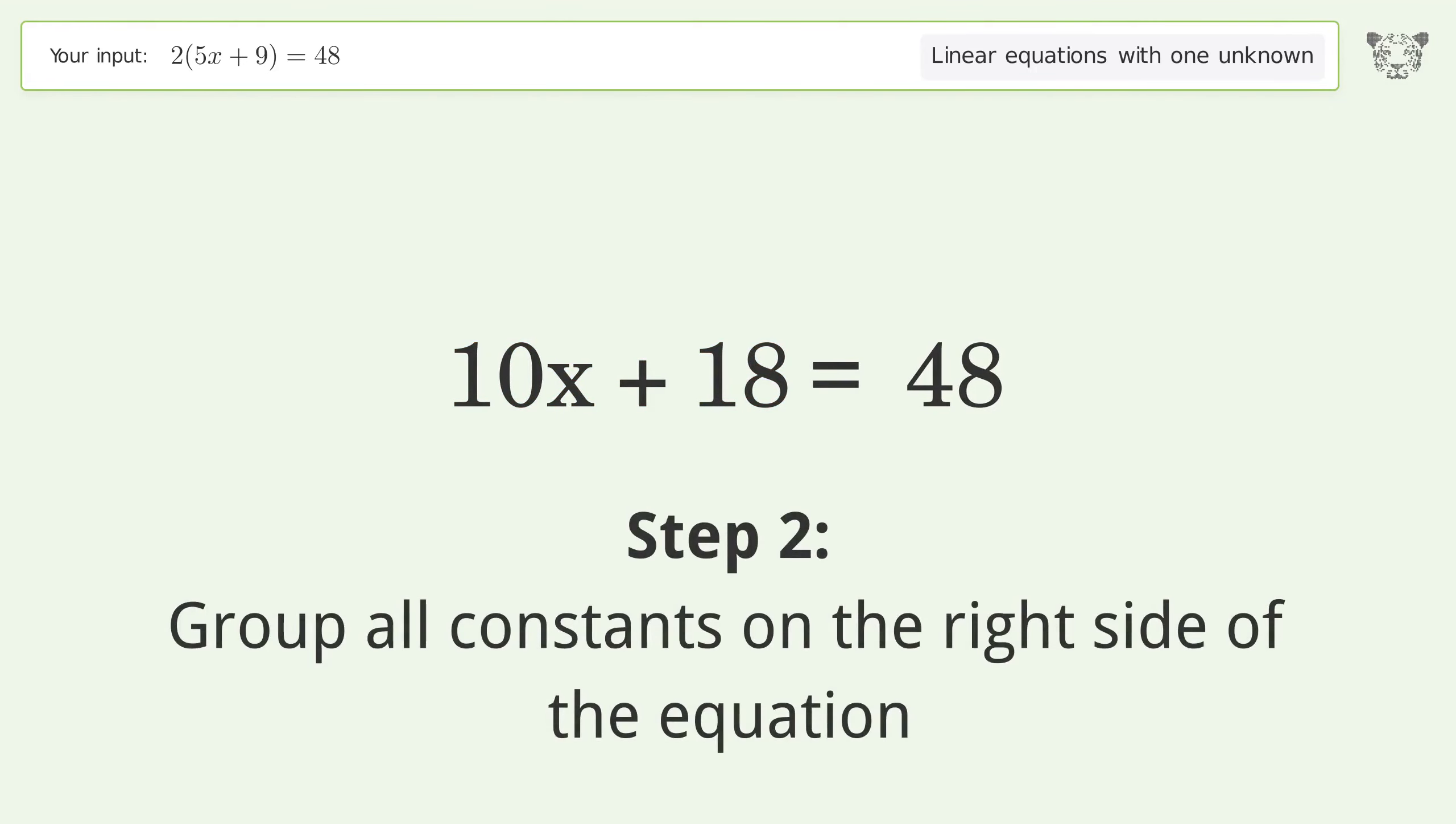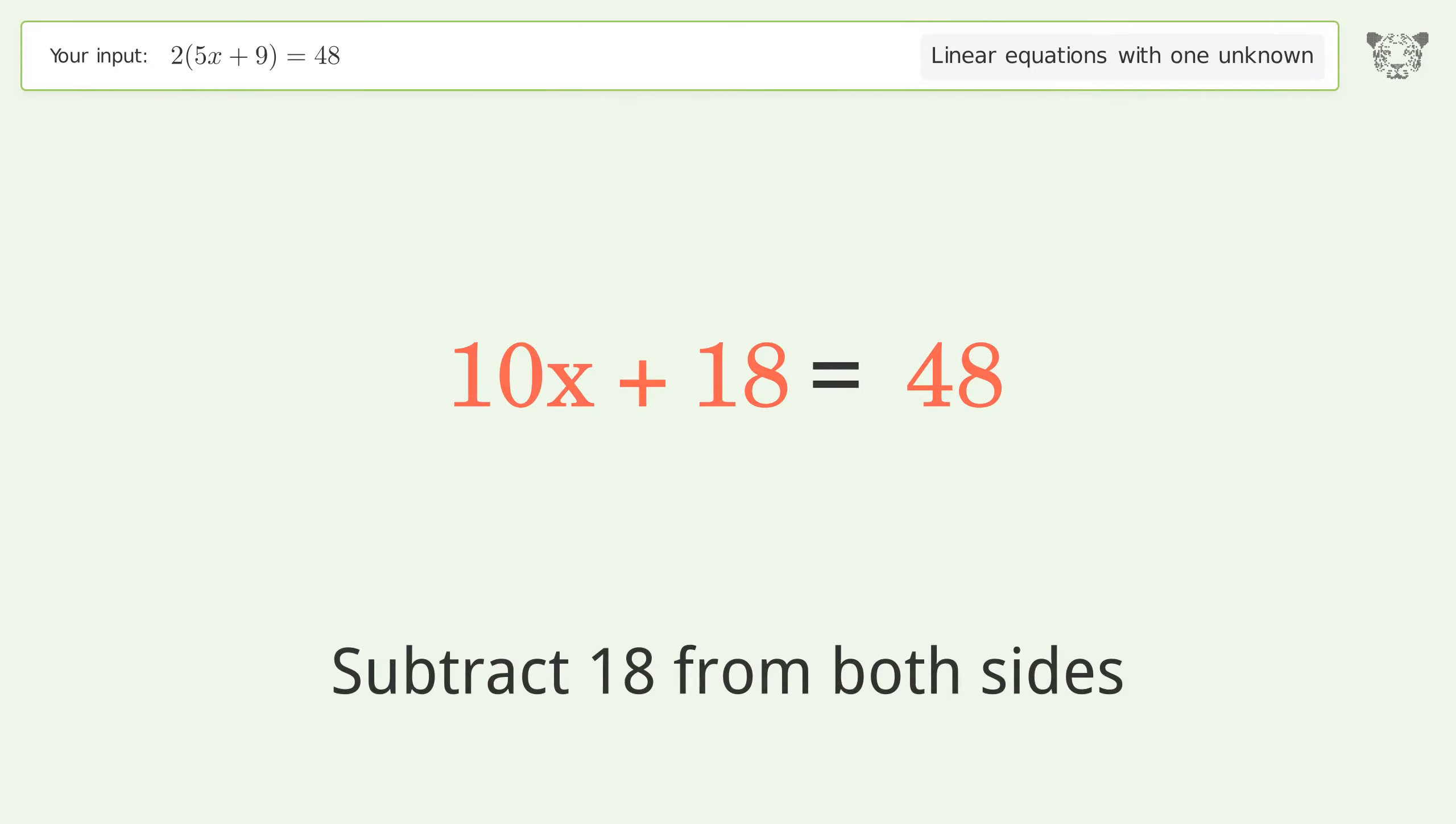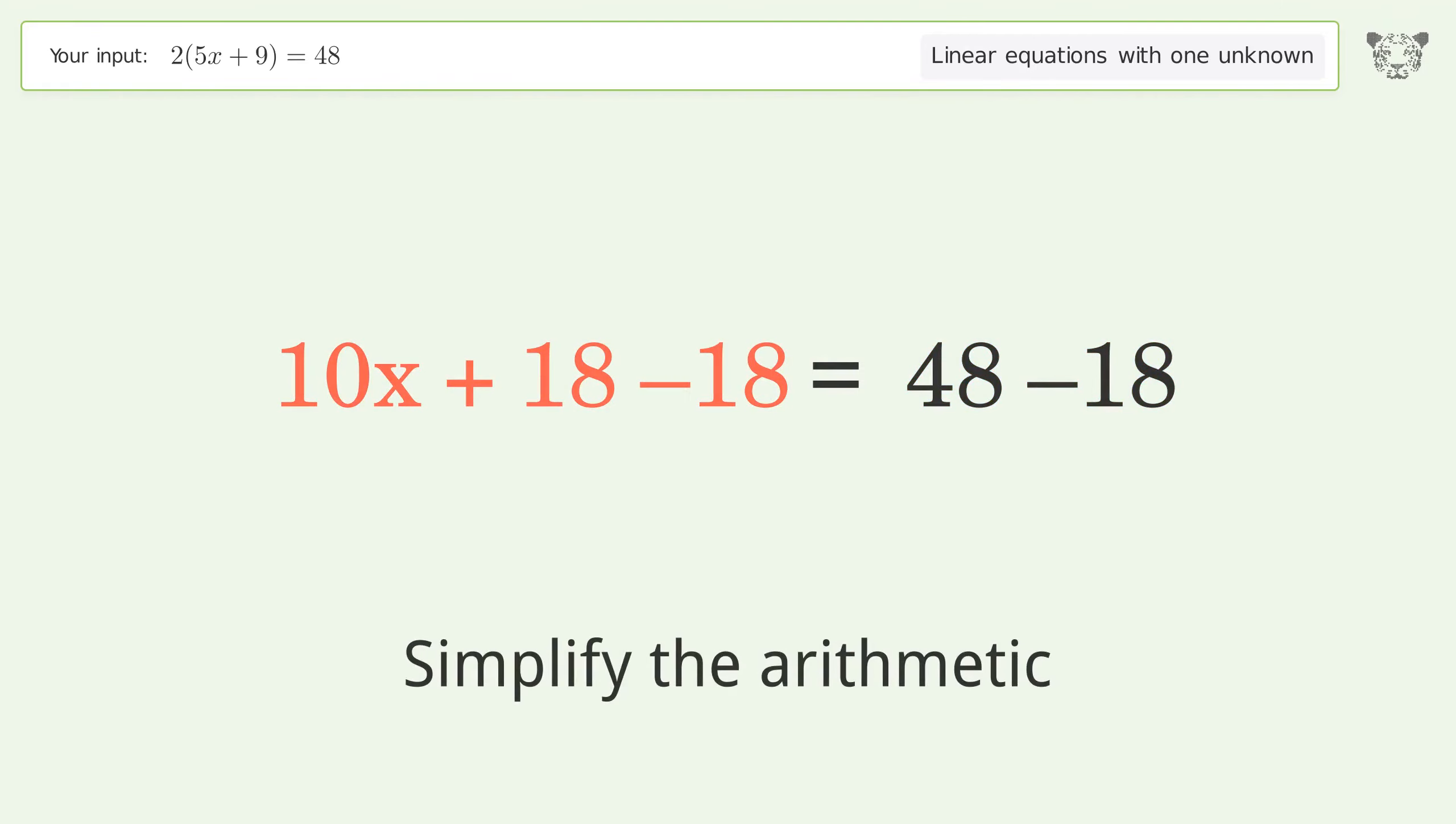Group all constants on the right side of the equation by subtracting 18 from both sides. Simplify the arithmetic.